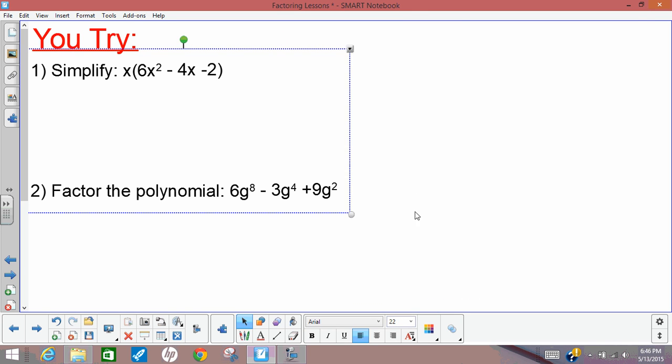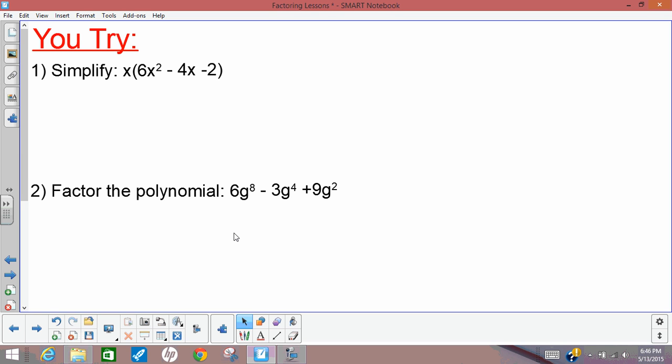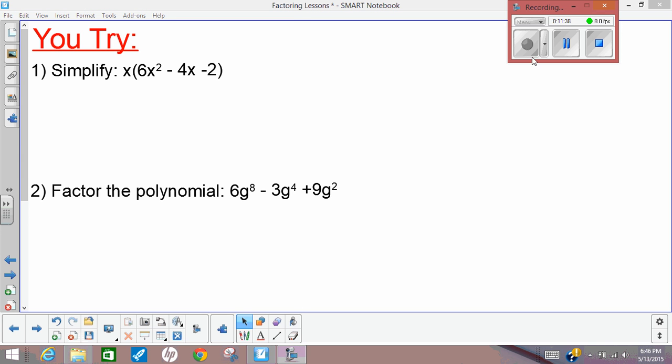So as in the past, we have some you-tries. There's two you-tries. I want you to do the distributive property in number 1, and I want you to find the greatest common factor in number 2 and write the polynomial factored. So you should have two things multiplied together. Remember, for number 2, if you want to check your answer, you can always use the distributive property, and you should get the original polynomial. We'll check those in class, and I'll answer questions. Good luck.